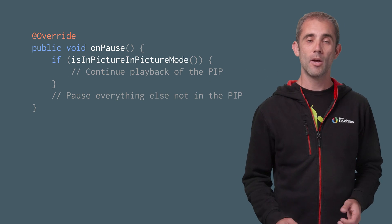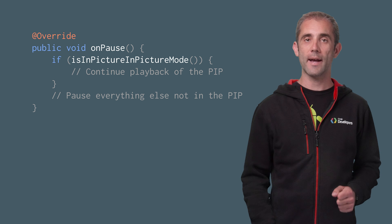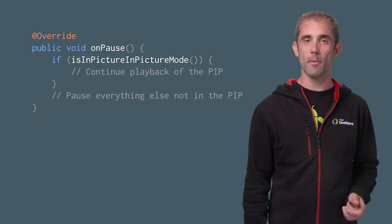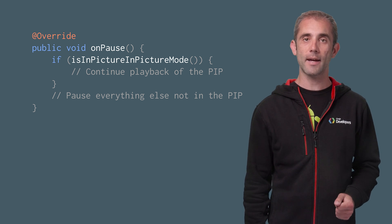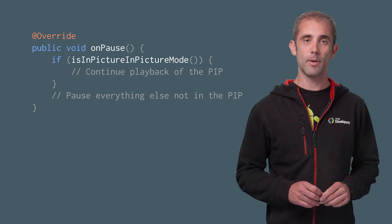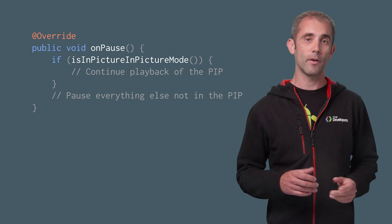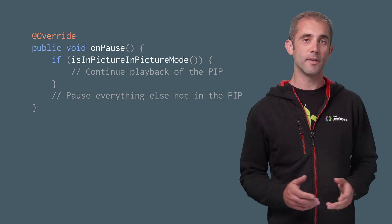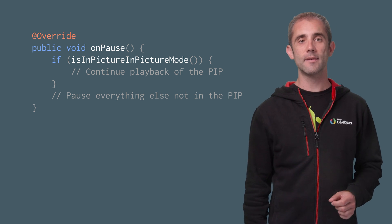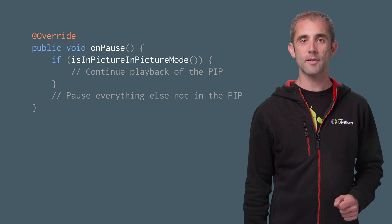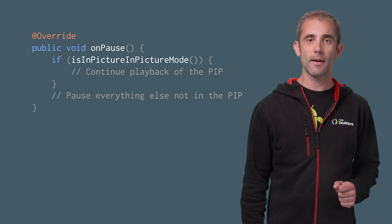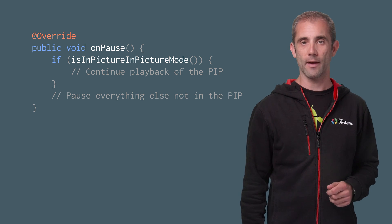At any time, you can call the activity's isInPictureInPictureMode method to detect whether your activity is in PIP mode. For example, when you switch to PIP mode, your activity is considered to be paused, so you should continue video playback and pause everything else.